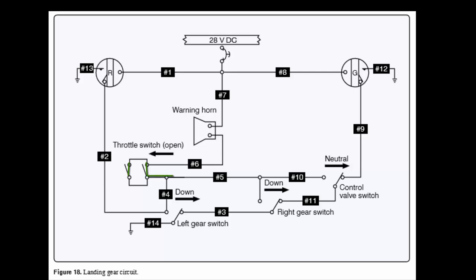Either one of these switches takes us to wires 4 and 5. They said with the gear up. So our left gear switch and our right gear switch are actually going to be in the up position, which puts them like this. So if we go down wire 4, it goes to the left gear switch.